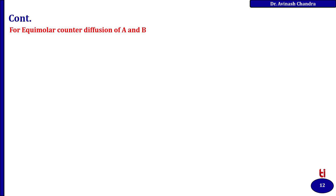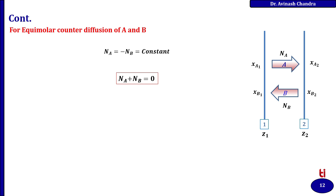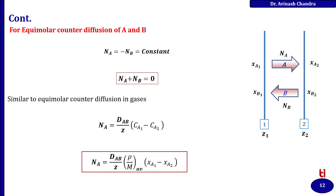Similar to the gas phase, for equimolar counter diffusion in liquid, A diffuses toward interface 2 and B diffuses toward interface 1. In this case, the diffusional flux satisfies NA = −NB = constant, so NA + NB = 0. Following the same approach as for the gas phase, NA = (Dab / Z) × (CA1 − CA2). When replacing concentration C with ρ / M_average, the expression becomes N = (Dab / Z) × (ρ / M)_avg × (XA1 − XA2).